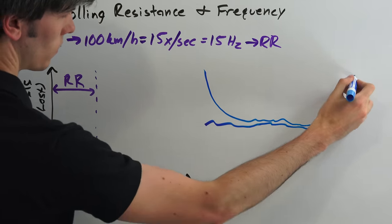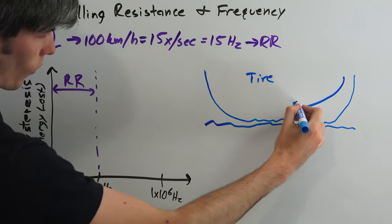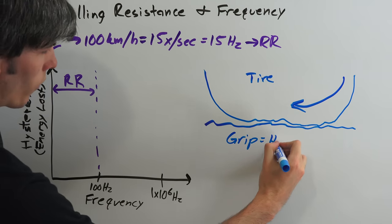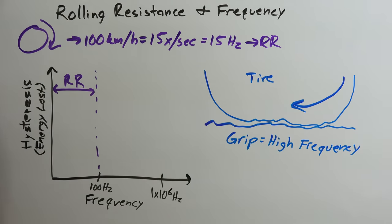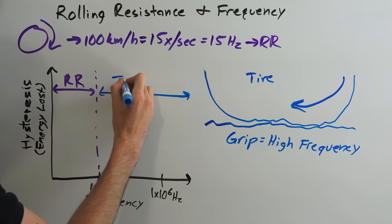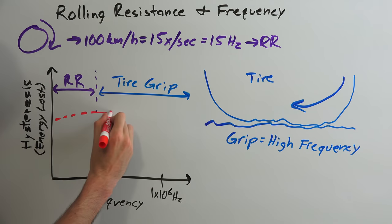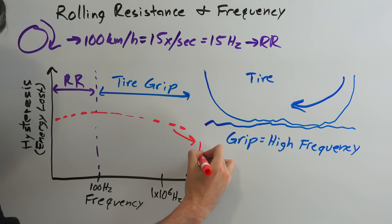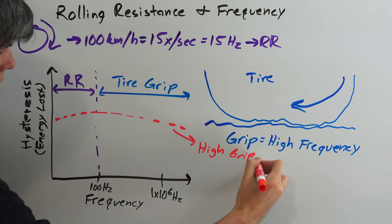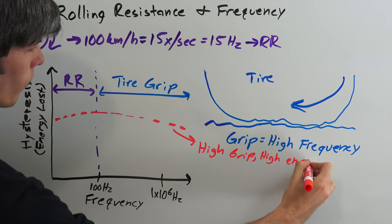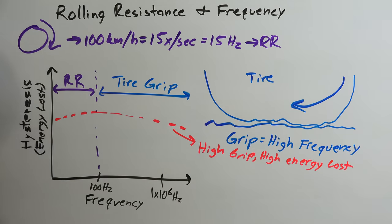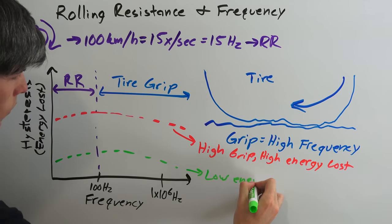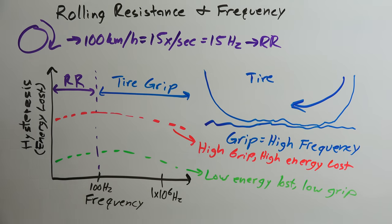Grip, however, comes from how the tire behaves as it distorts to the unevenness of the road. The tread needs to react quickly to the changing surface in order to maintain grip, and this is a much higher frequency distortion. Before the introduction of silica into tire compounds, you could typically only choose between a compound with high energy losses and high grip across all frequencies, or low energy losses across all frequencies resulting in less grip.